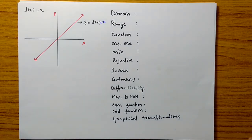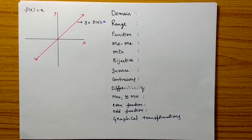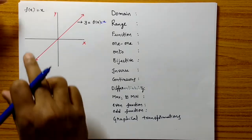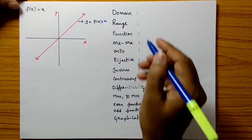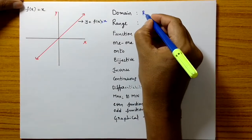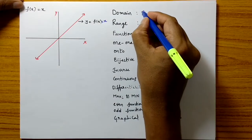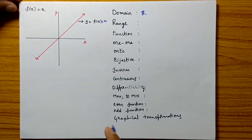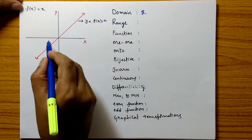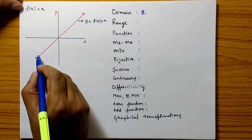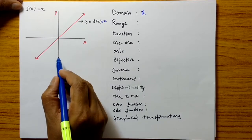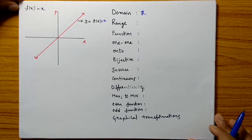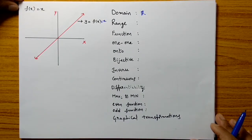If we discuss its properties, this function is defined for all real numbers. So what is the domain of this function? The domain of this function is all real numbers. For any real value of x, a corresponding y value we will get.